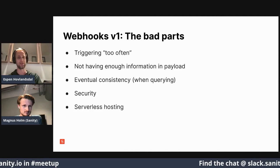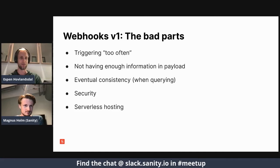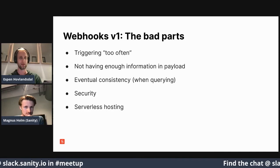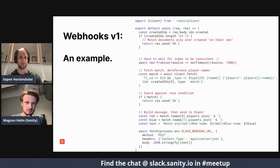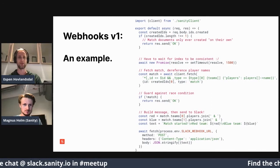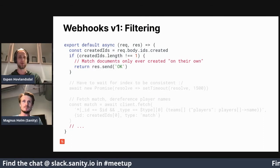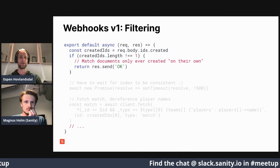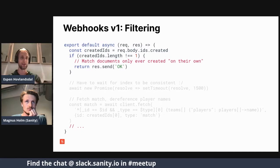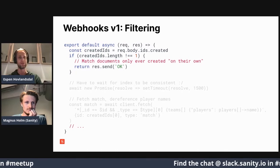Looking at the foosball system as an example: in the code, once you got a request in, you would take the IDs and check which ones were created. You could do something slightly clever — we know that when a match is created, there's only ever one document in that transaction. So that's one way of filtering out events where multiple things happened at once, and you can just ignore those events.